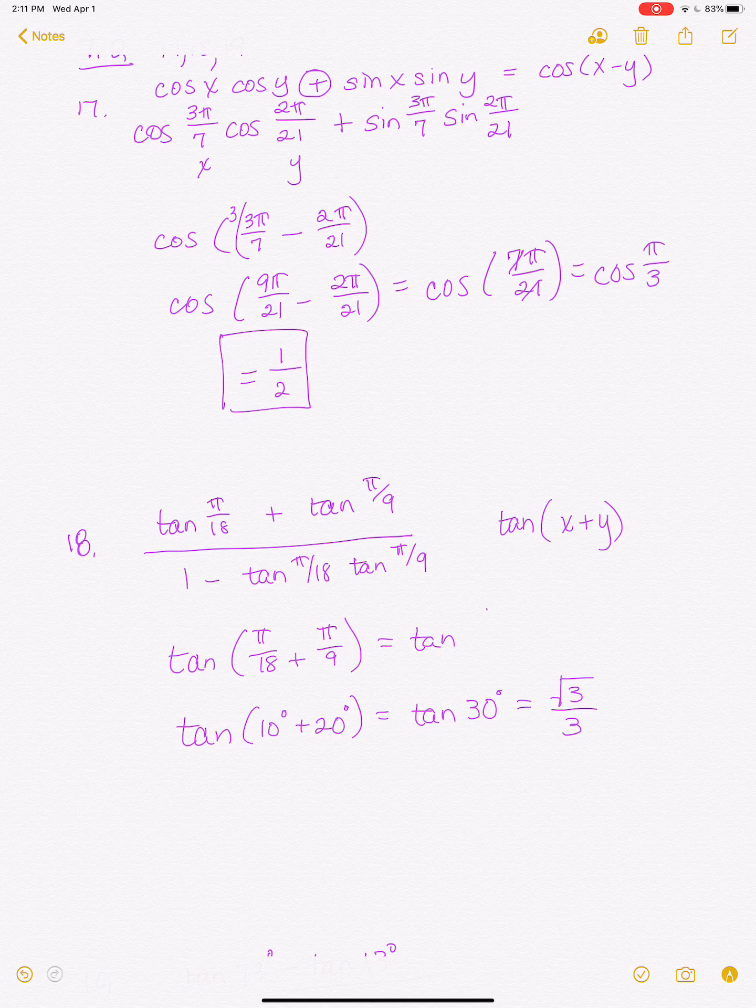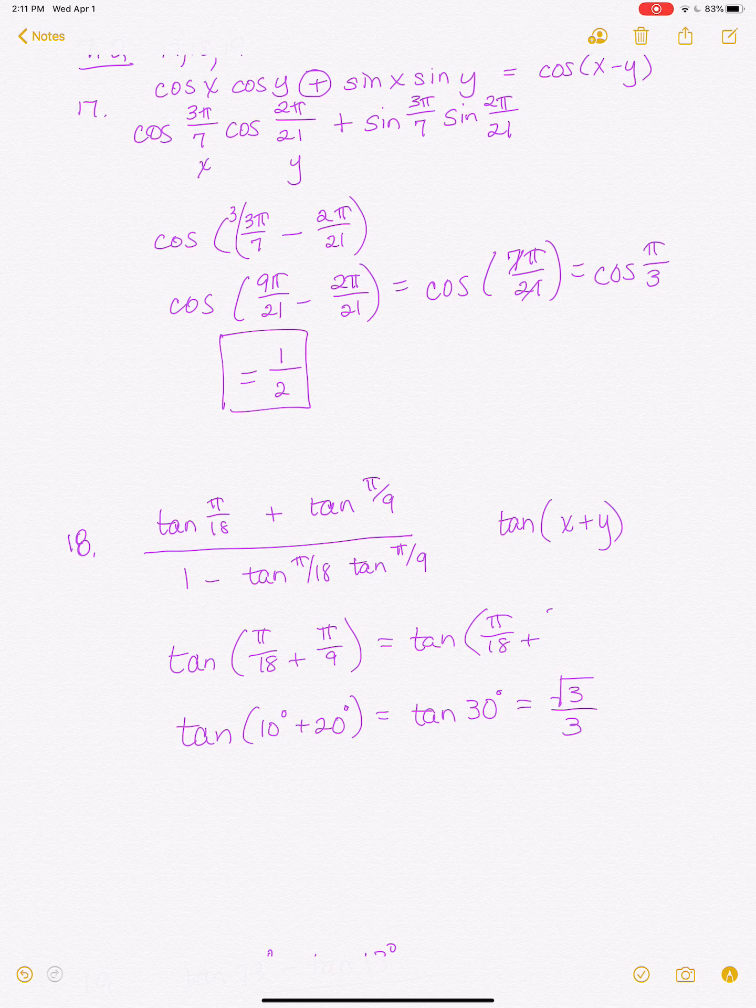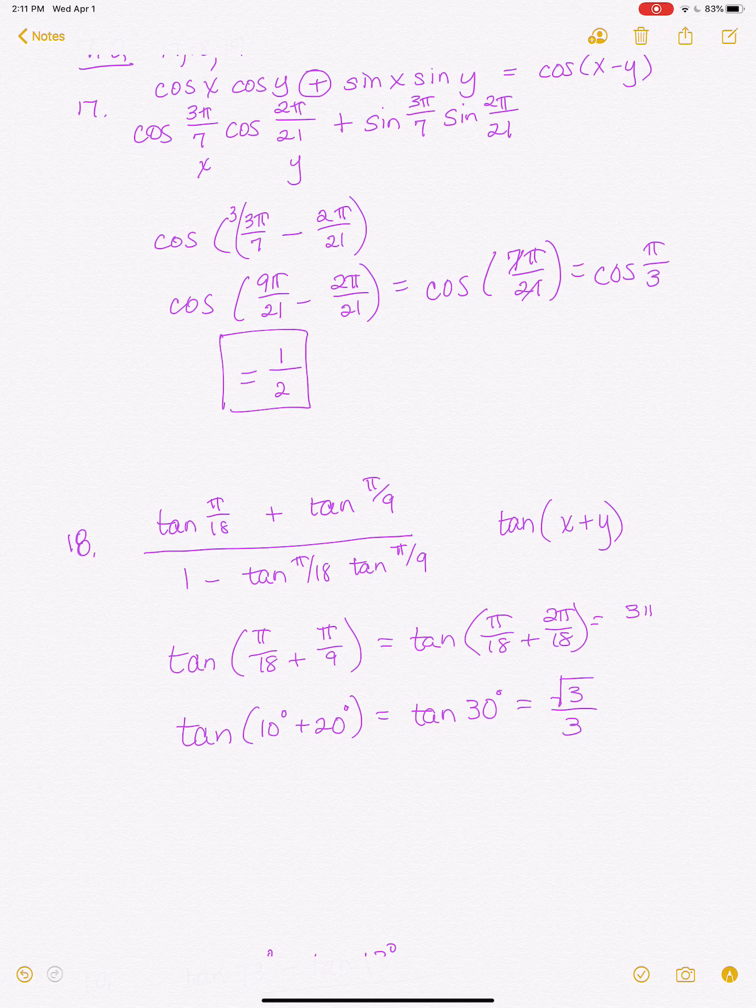And keeping it in radians, if you want to do that's pi over 18 plus 2 pi over 18, which is 3 pi over 18, or pi over 6, which is 30 degrees. So anyway you go.